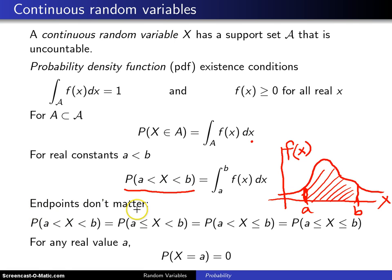One thing that is nice about continuous random variables, and this is not true of discrete random variables, is that the endpoints don't matter. If you want this quantity, probability X is between A and B, that can also be written as the probability A is less than or equal to X is less than B, or the probability A is less than X is less than or equal to B, or the probability A is less than or equal to X is less than or equal to B. In all cases, you will simply integrate f of X between A and B to calculate that probability.